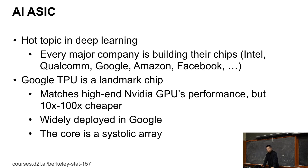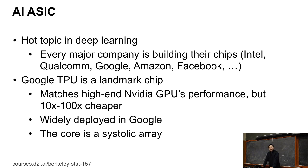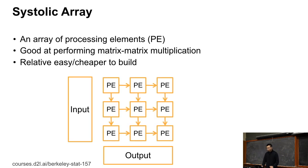At Google, TPU is widely deployed and researchers can use TPUs for research — in fact, if you read many Google papers, a lot of researchers use TPUs instead of GPUs. The core of the TPU is called a systolic array. We'll give a brief introduction of what a systolic array is and show why it's good for deep learning.